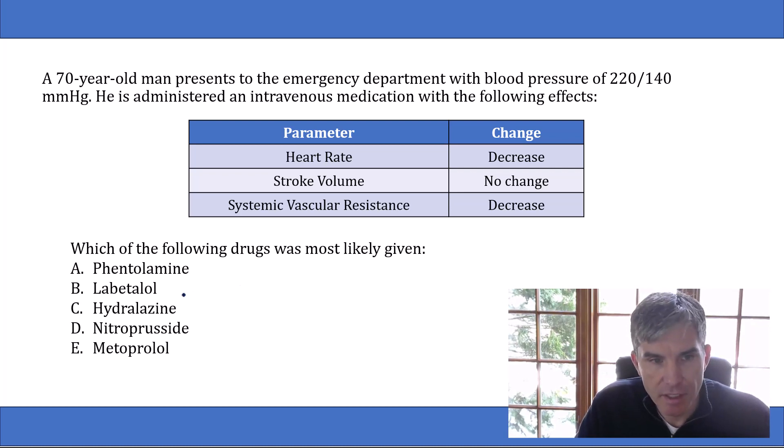So let's start by reminding ourselves of how the five drugs that are answer choices work. Phentolamine is an alpha blocker. It's going to decrease systemic vascular resistance. Labetalol is a combination alpha and beta receptor blocker. Hydralazine and nitroprusside work through mechanisms outside of the alpha-beta system. They're direct vasodilators, which lower systemic vascular resistance. And then finally, metoprolol is a cardio-selective beta-1 blocker.